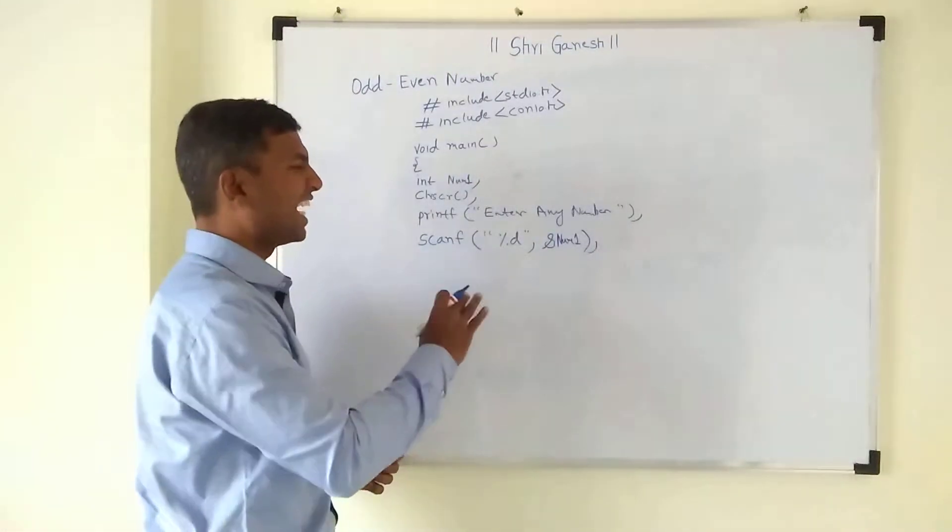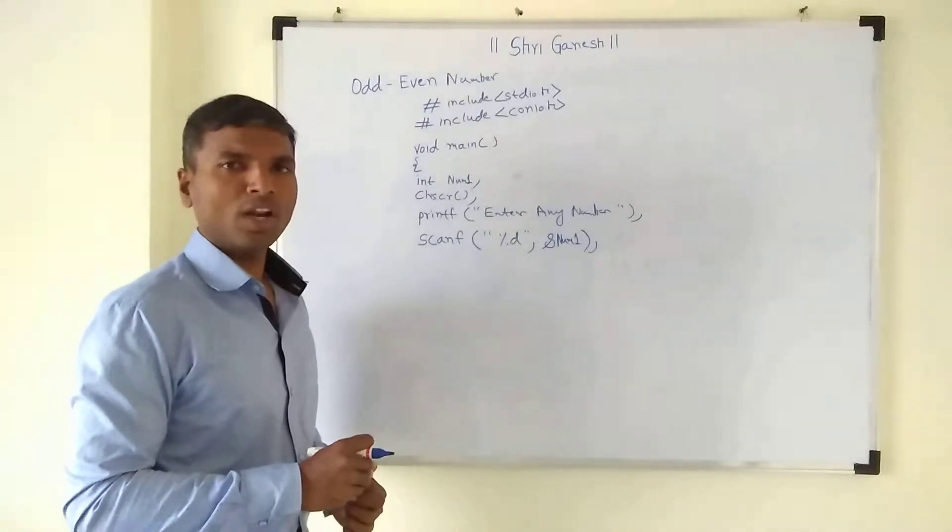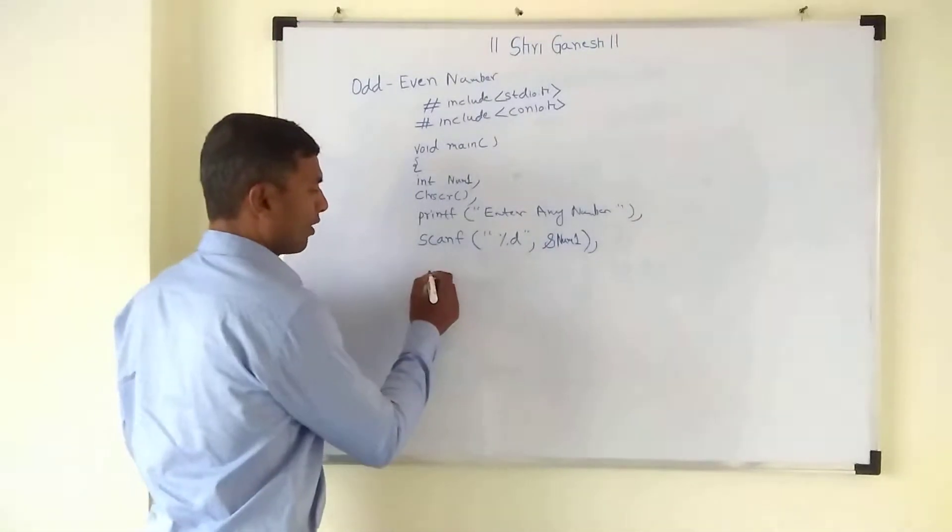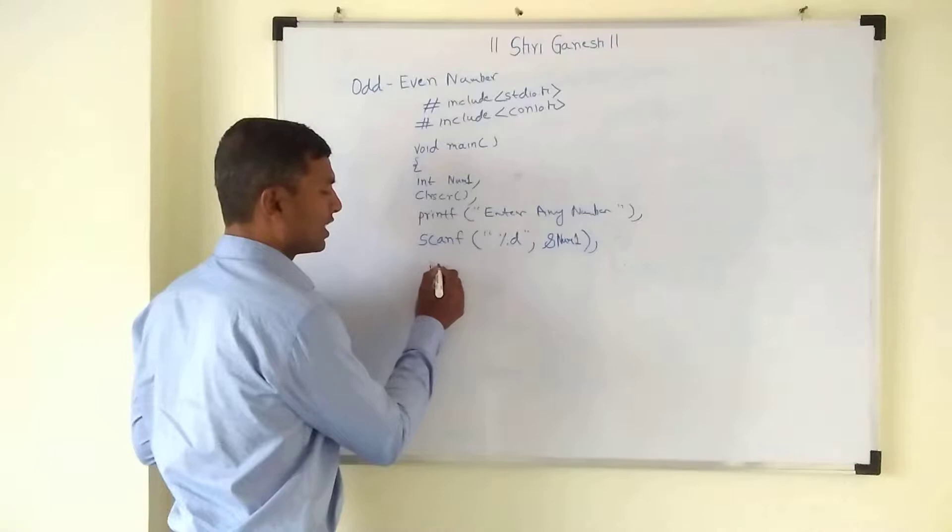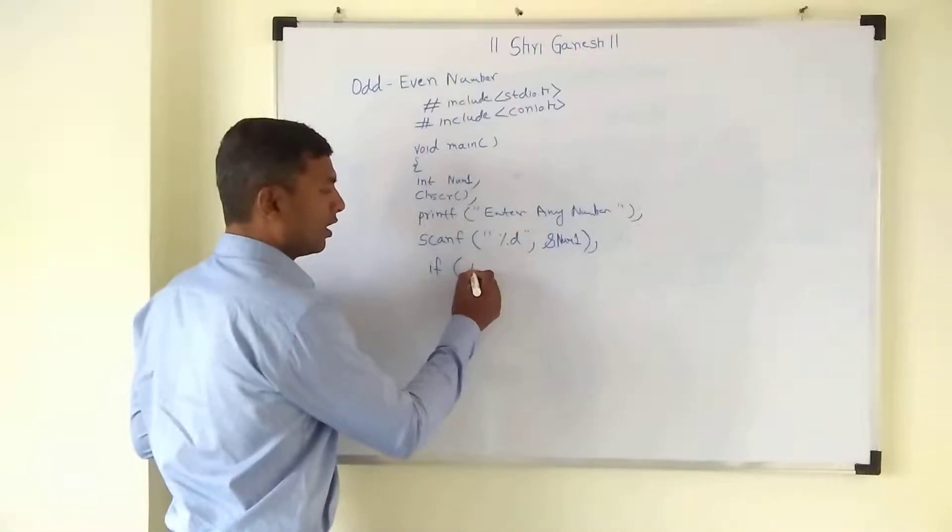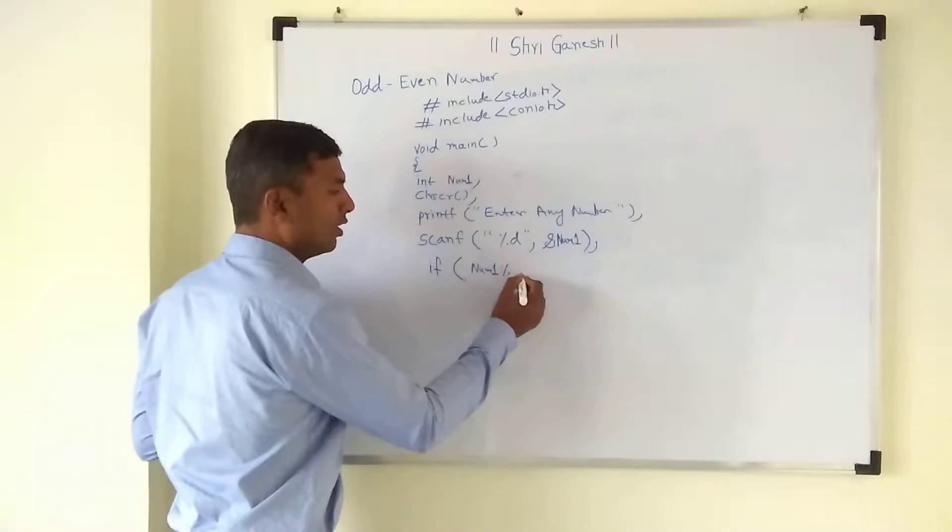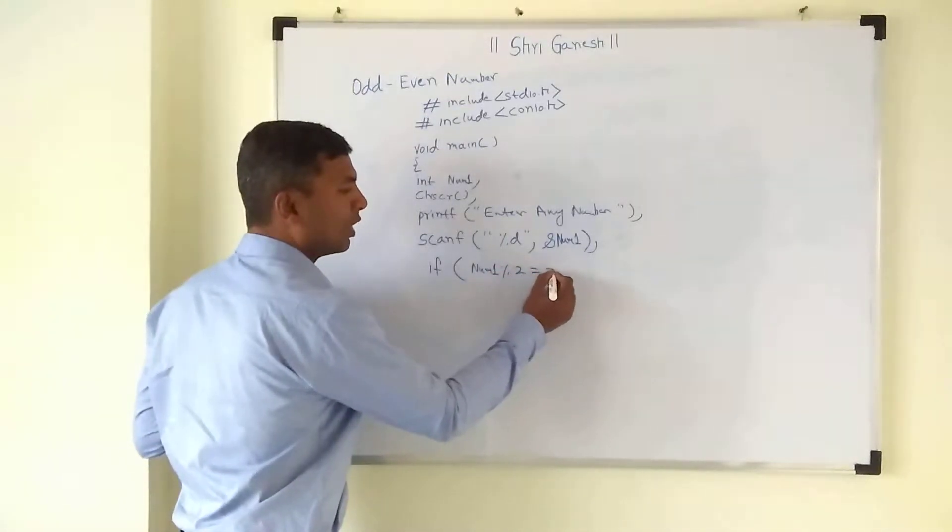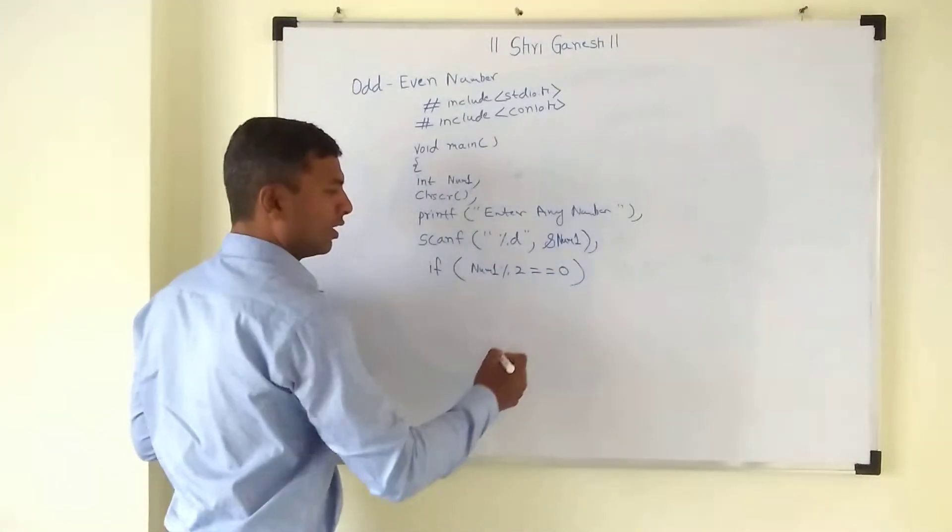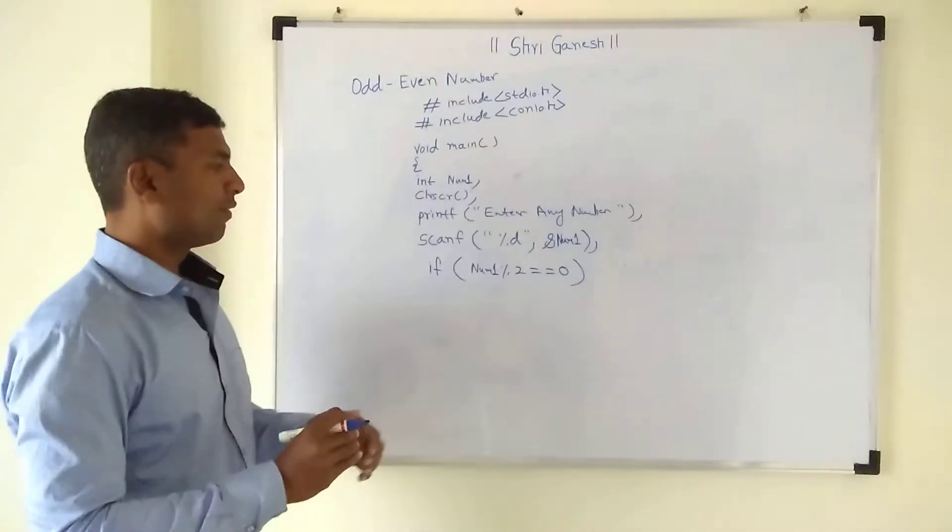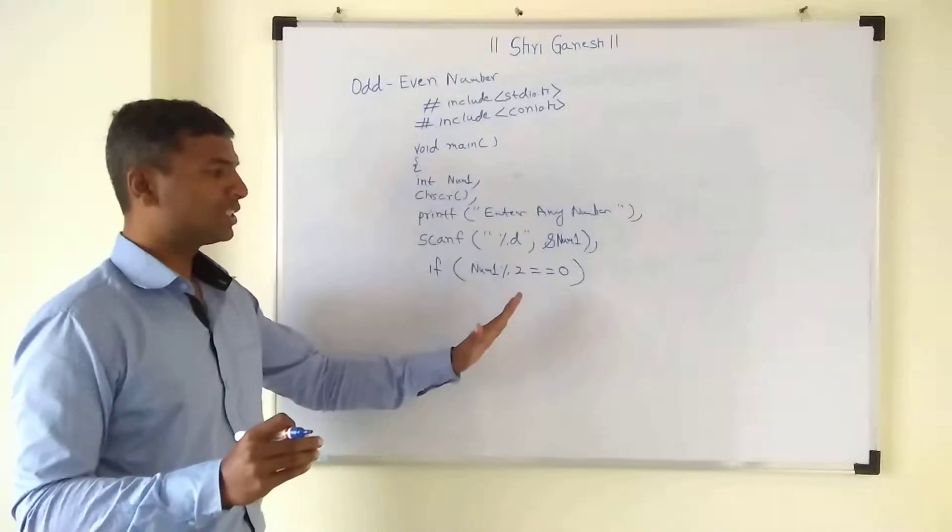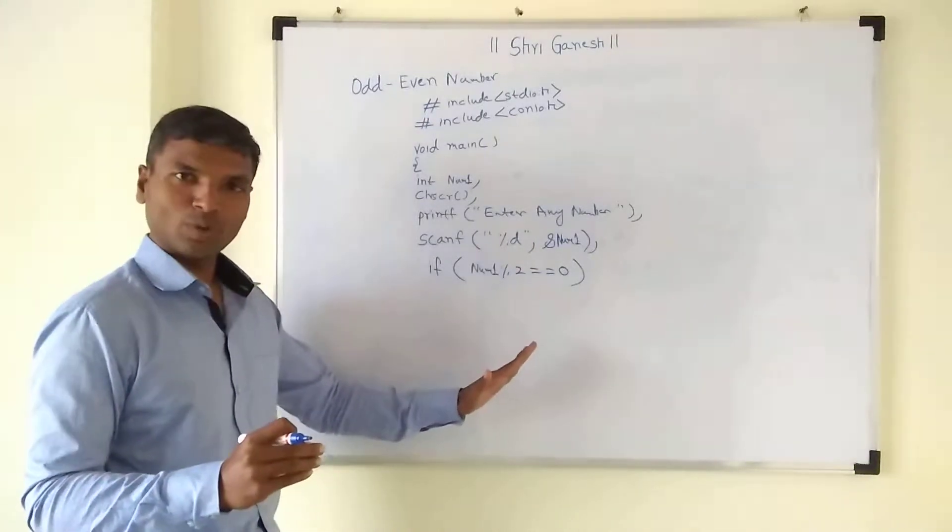Now you want to check whether the entered number is odd or even. So we will check with the help of if statement: if num1 is divided by 2 and the remainder will be 0, the remainder will be 0.